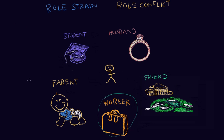So to summarize: role strain is the tension between the roles of one single status — like a student — and role conflict involves the conflict between the roles of two or more statuses.